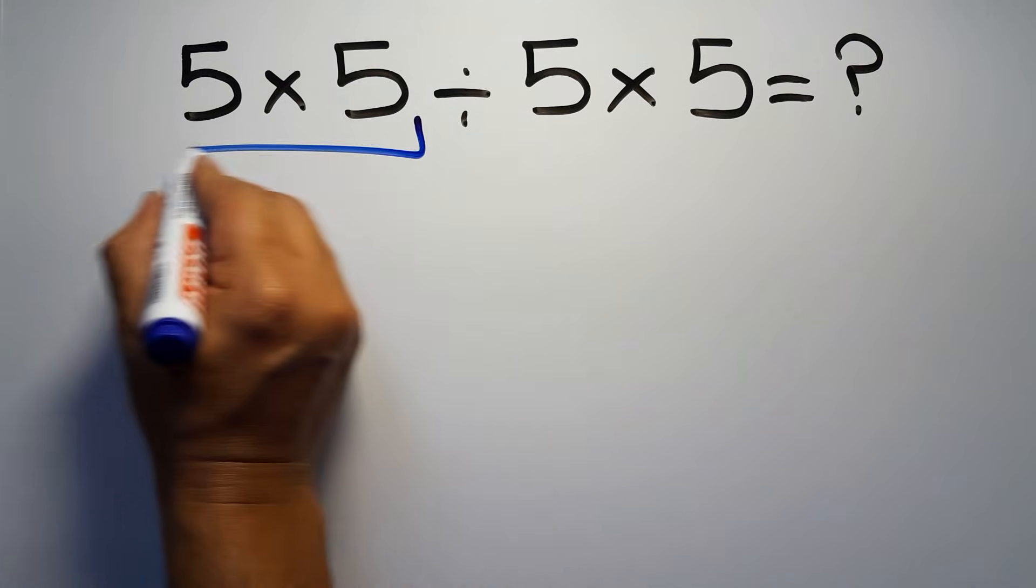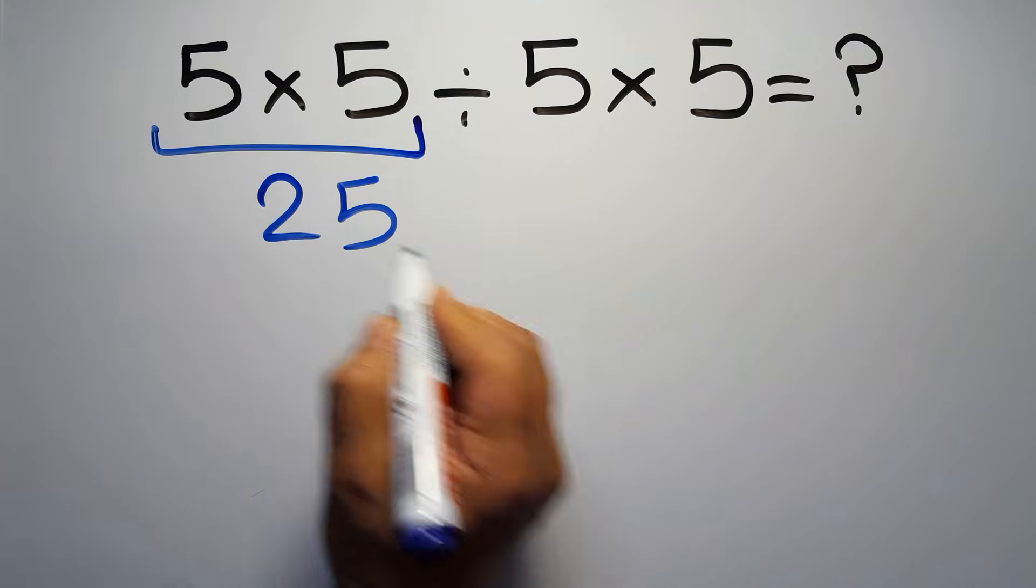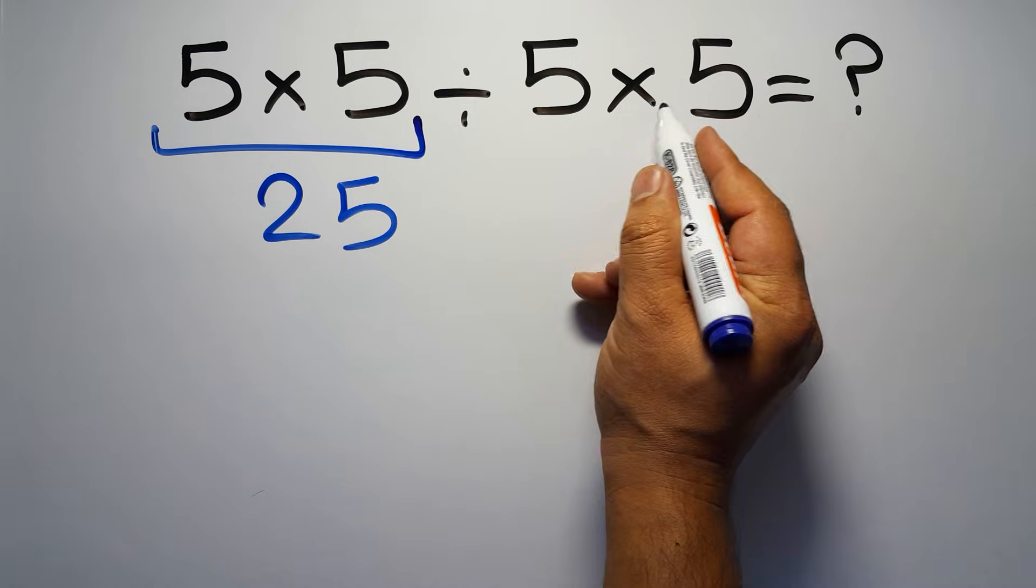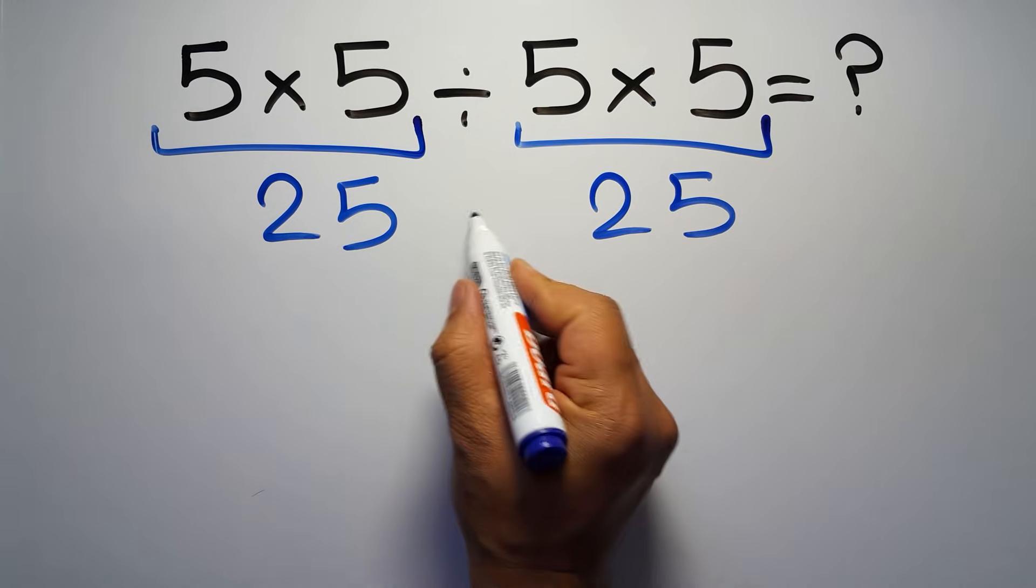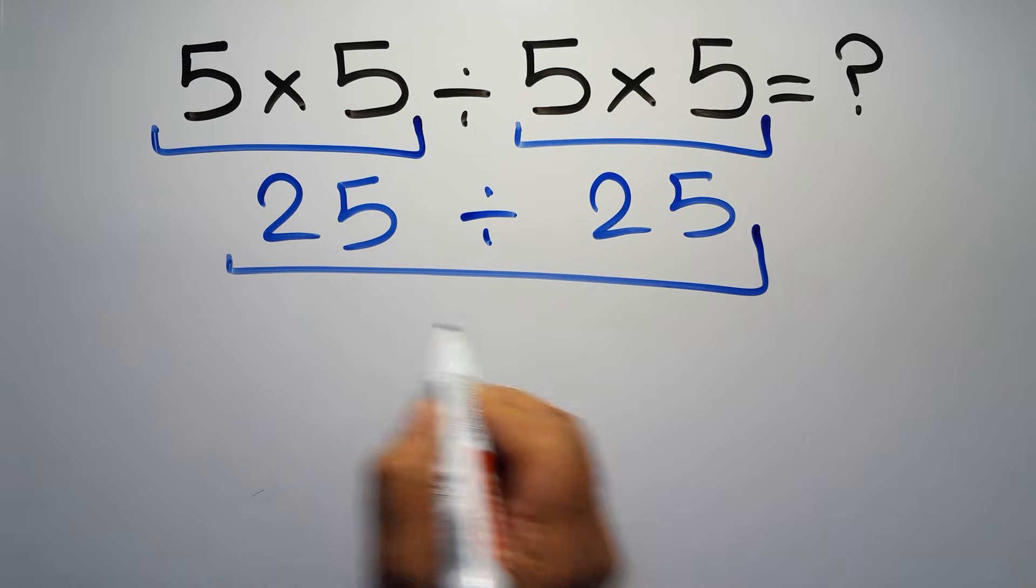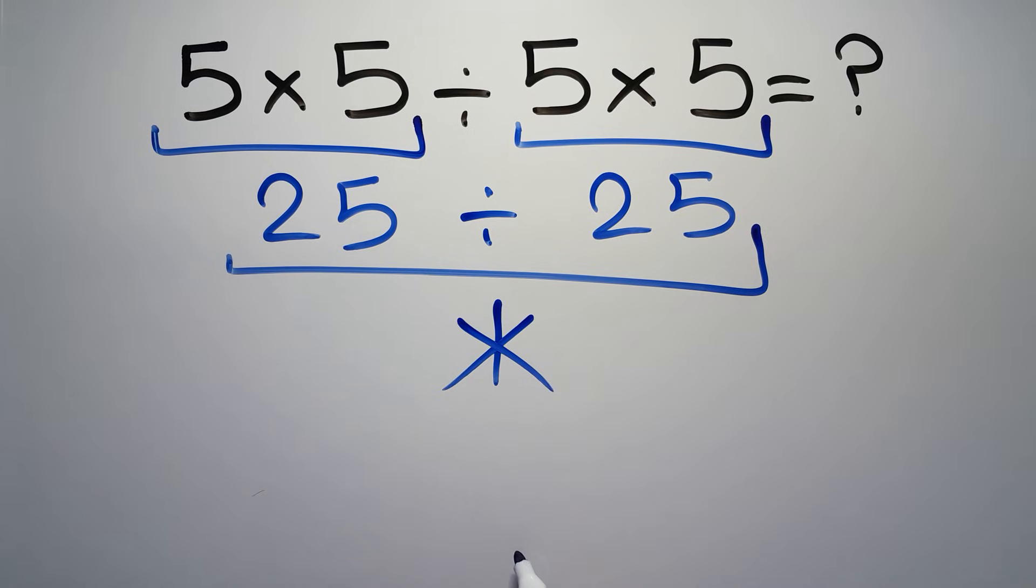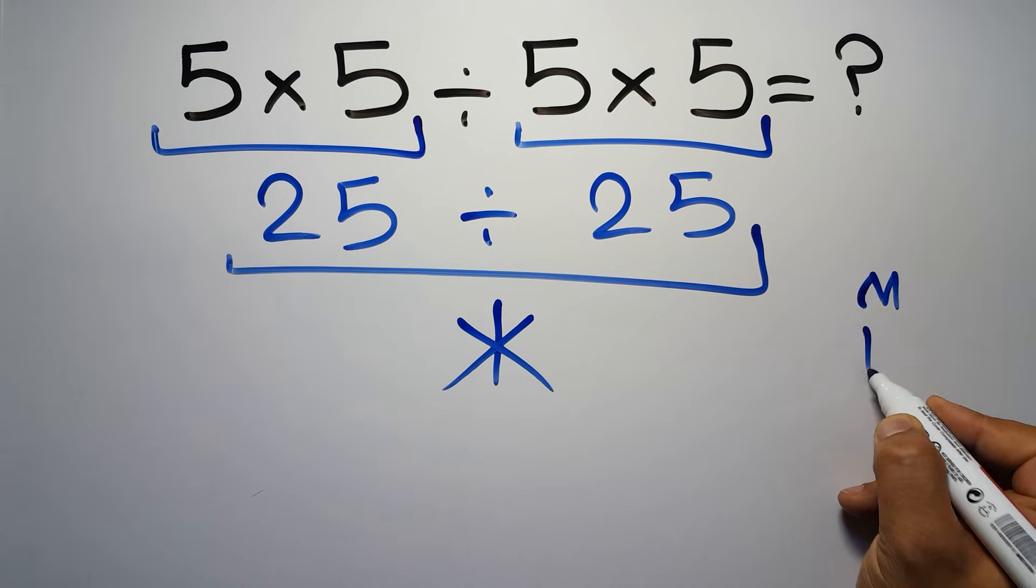5 times 5 gives us 25, and again here we have 5 times 5, so 25 divided by 25 equals 1. But this answer is not correct because according to the rule of operations, multiplication and division have equal priority.